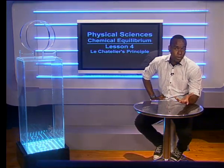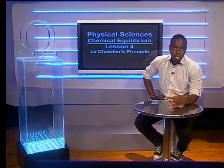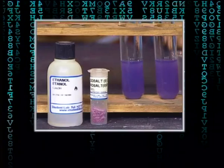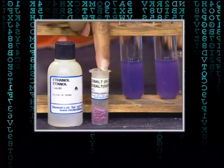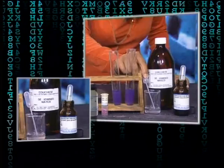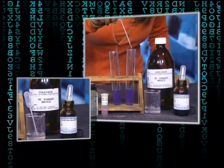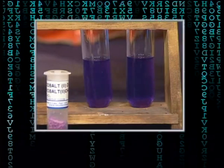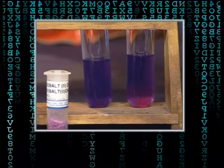Grade 12s, you know what chemical equilibrium is, so we'll start straight away with some chemical magic. We made these two solutions by dissolving cobalt chloride in alcohol. We also added a few drops of water to both of them. Notice that the color of both solutions is purple-blue.